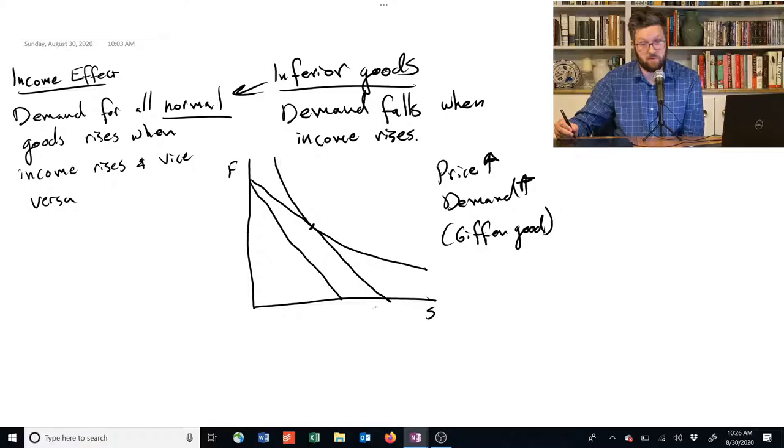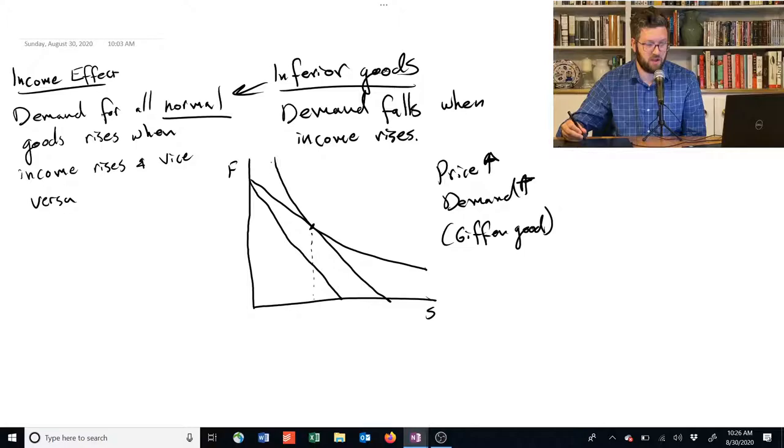Well, suppose the price of shelter rises. That means we can't afford as much shelter. This is the amount of shelter we bought at the old price. If we're going to buy more when the price rises, we need to be on this part of the budget constraint.